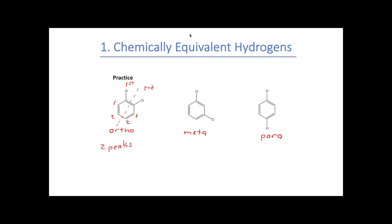Moving on to our meta substitution, we can see there's still a mirror plane — it goes right through the carbon in the middle of the two chlorines. So that carbon will give me one peak. The carbon on the other side of both chlorines will give another peak for the hydrogens. And finally, the one at the end will give a third peak. So we should see three peaks in our hydrogen NMR spectra.